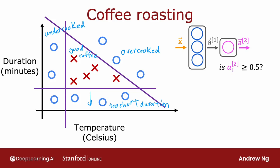So the task is given a feature vector x with both temperature and duration, say 200 degrees Celsius for 17 minutes, how can we do inference in a neural network to get it to tell us whether or not this temperature and duration setting will result in good coffee or not? It looks like this.